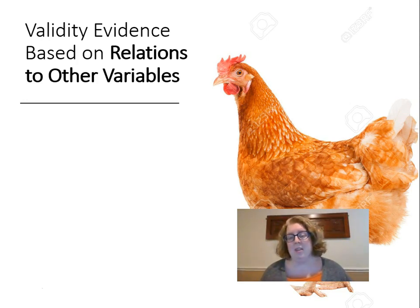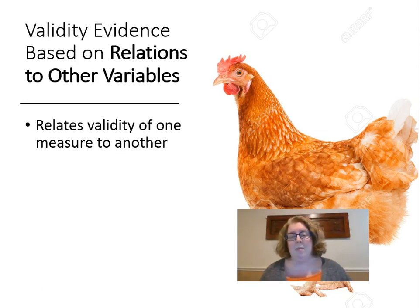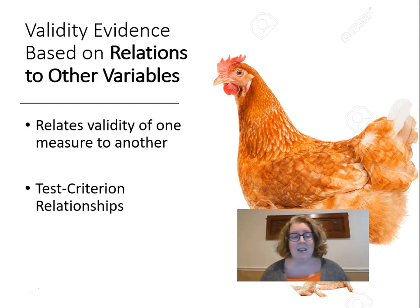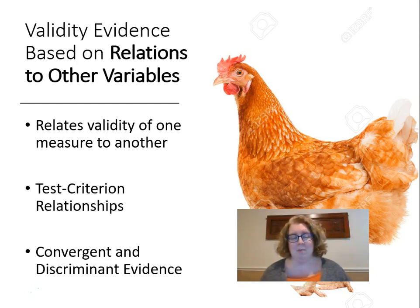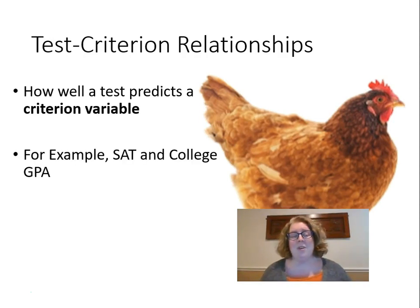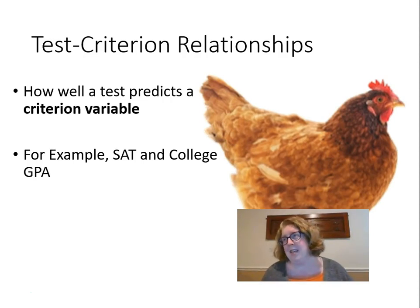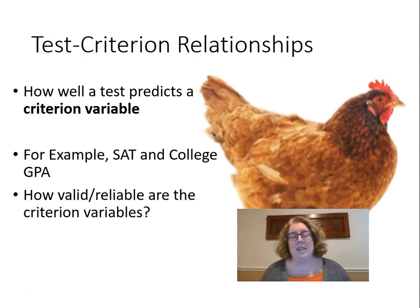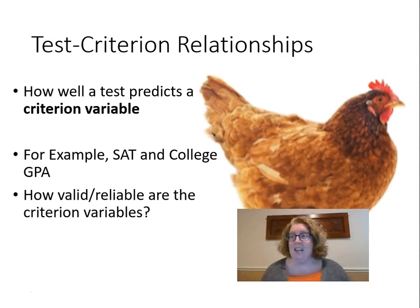Finally, validity evidence based upon relations to other variables. These are test-criterion relationships and convergent/discriminant evidence. Test-criterion relationships address how well a test predicts some criterion variable. The classic example: how well does the SAT predict college GPA? The answer is it's not the best predictor — high school GPA is actually a much better predictor of college GPA — but the SAT is certainly one predictor. We call this predictive evidence.